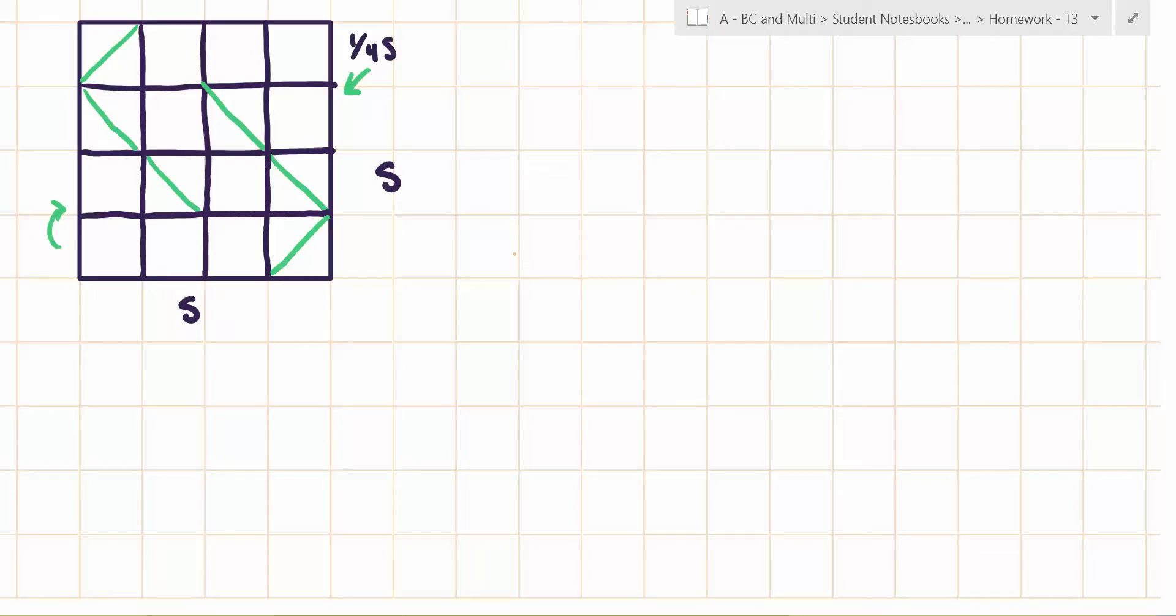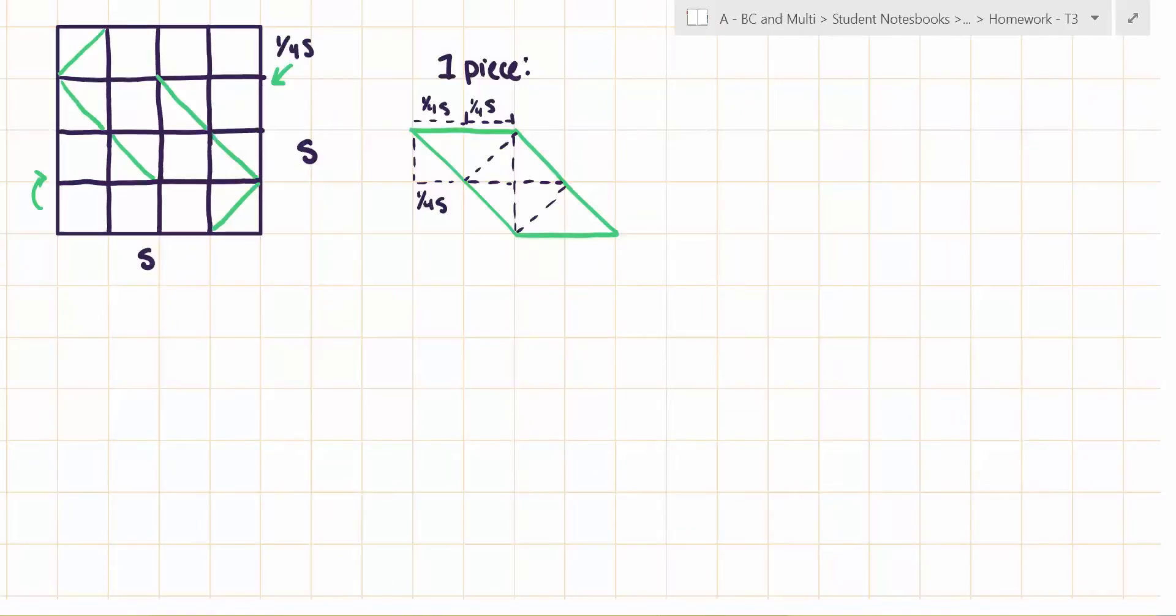So I drew out one of these squares and all the folds that are made to get to one piece, and this will help us find the surface area of half of a point on the 30-piece star. So I drew out one of these pieces to look at.